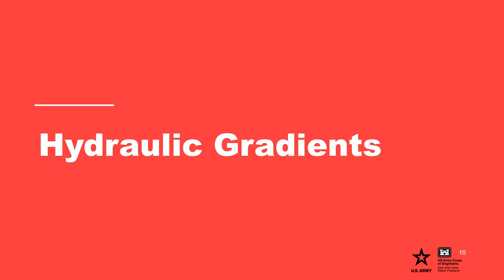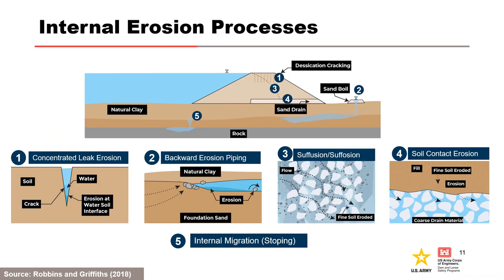Hydraulic Gradients. As we have seen in this training course, the hydraulic gradient influences the likelihood of initiation and in some cases progression of each of the five internal erosion processes. For concentrated leak erosion, it is used to estimate hydraulic shear stress for initiation. For backward erosion piping, it includes vertical exit gradient for initiation and horizontal gradient for progression. For suffusion, it includes exit gradient for initiation. For soil contact erosion, it is used to estimate Darcy velocity for initiation. For internal migration, a vertical downward gradient is required.